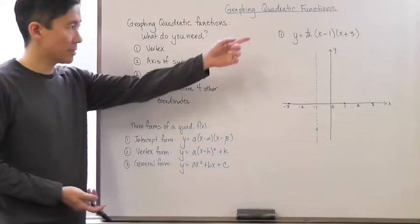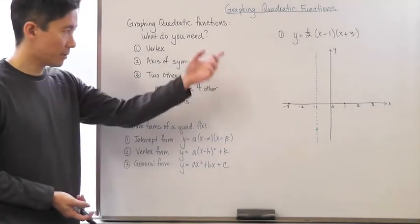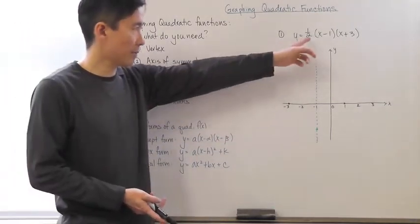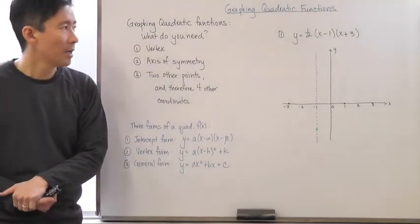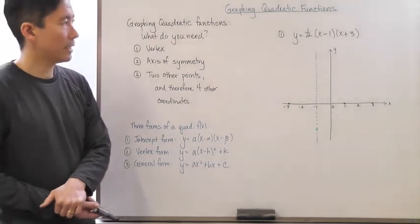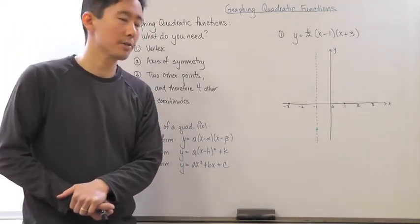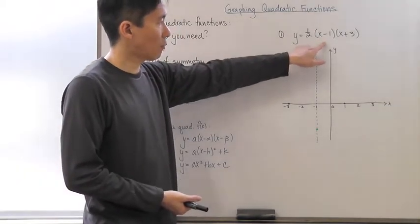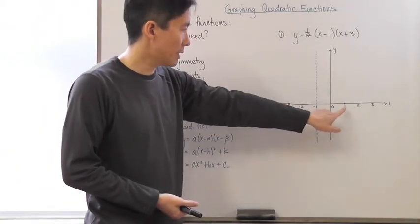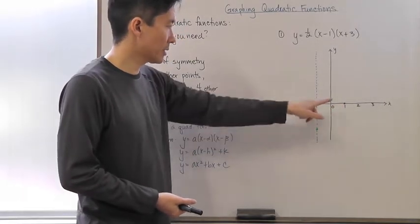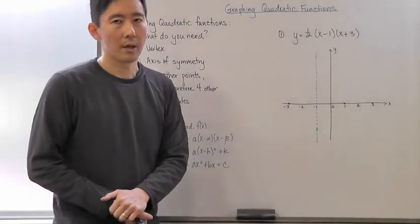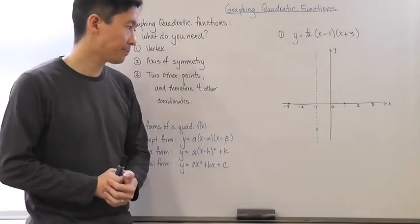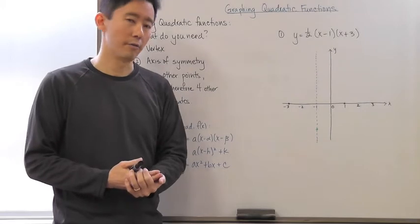Let's look at some examples using each of these three forms. For the intercept form, let's say we have a factored quadratic. If we let y equal zero, we can find the x-intercepts very quickly — x equals one or x equals negative three. Those are where the x-intercepts are. The nice thing about a parabola is that there's symmetry through the vertex.